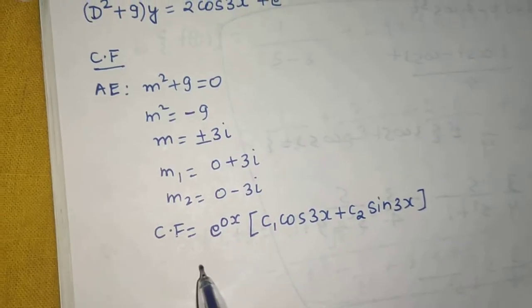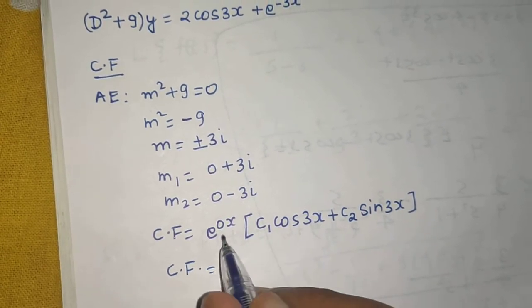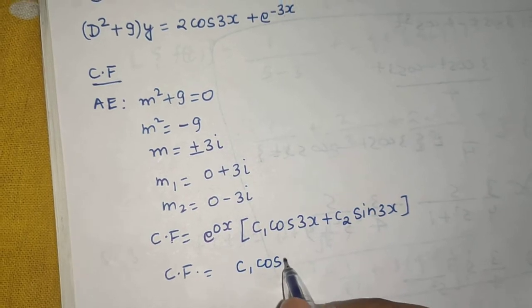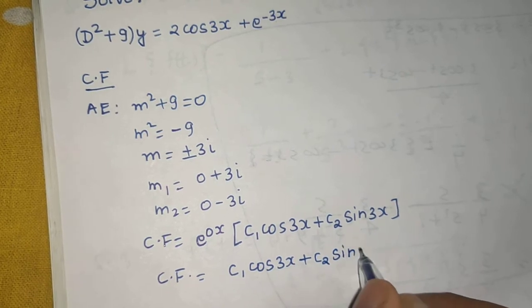So we can simplify it more and write our complementary function finally as e power 0x is 1, so we can write as c₁ cos 3x plus c₂ sin 3x. So this is our complementary function.